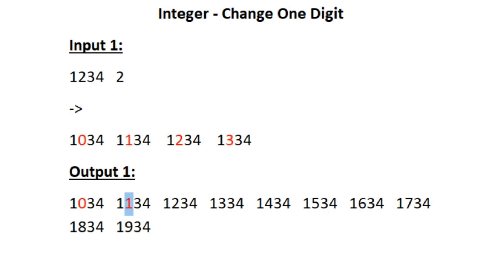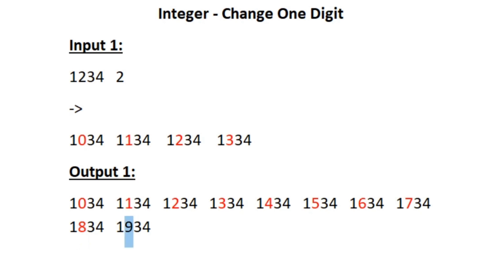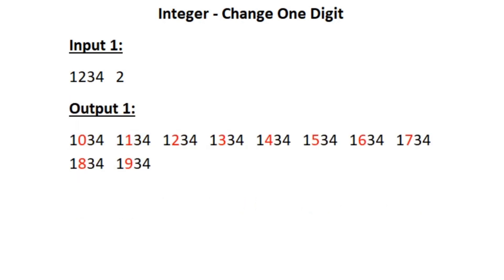In our expected output, the second digit in the first integer is 0, then for the second integer the second digit is 1, then 2, 3, 4, 5, 6, 7, 8, 9. These are the 10 integers formed by replacing the kth digit in the integer n, and they are printed in sorted order. This is how we should be printing our output.